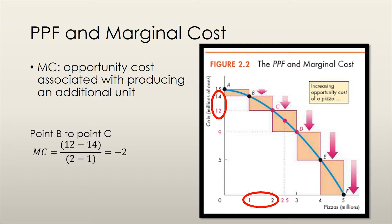We use the rise over run method to calculate the slope of the PPF, which in turn gives us the opportunity cost of producing an additional unit of pizza. The change in cola, which is on the y-axis, is negative 2, and the change in pizza, which is on the x-axis, is 1. Negative 2 divided by 1 equals negative 2. Thus, the marginal cost of producing pizza at point B is 2 units of cola. We are giving up 2 units of cola to produce 1 unit of pizza.